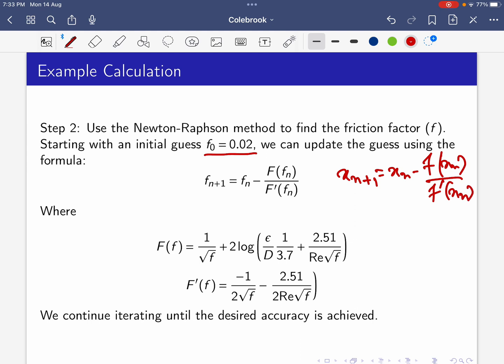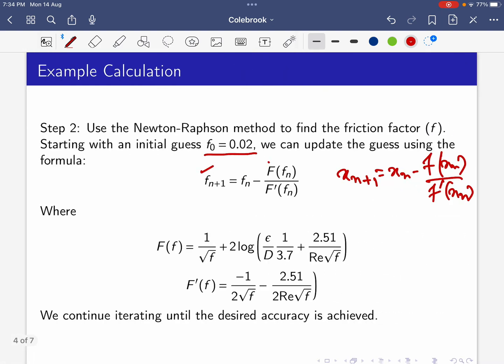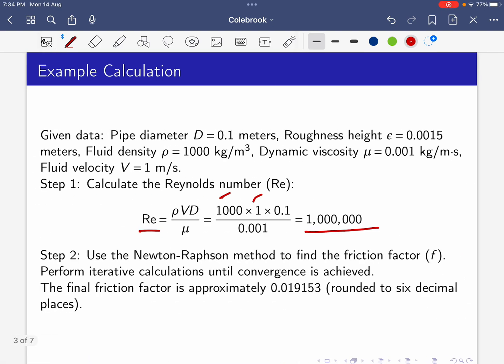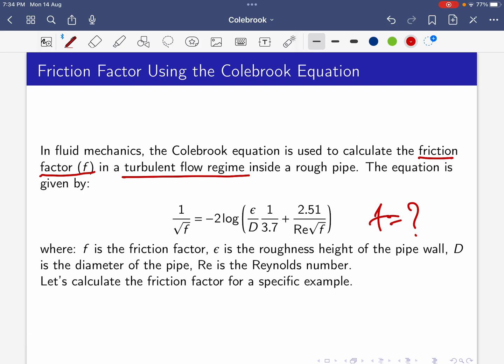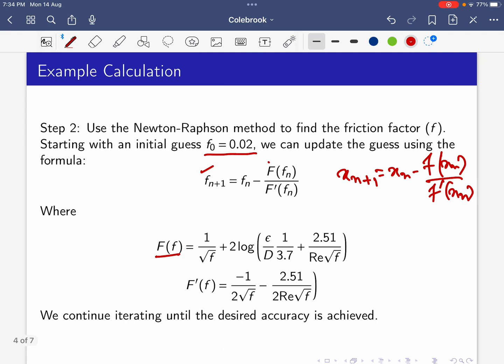We write the Colebrook equation in functional form: F(f) = 1/√f + 2log(ε/D × 1/3.7 + 2.51/(Re√f)). We're putting the equation in this form where F(f) equals one by root f plus the whole logarithmic term.